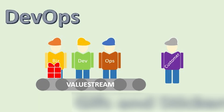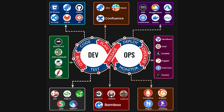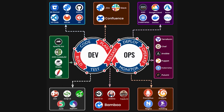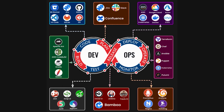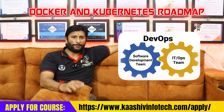You can use Docker, Jenkins, Kubernetes, Ansible, Terraform, Prometheus, Grafana, and Nagios. You can use GitHub tools. You can use DevOps specialist tools.